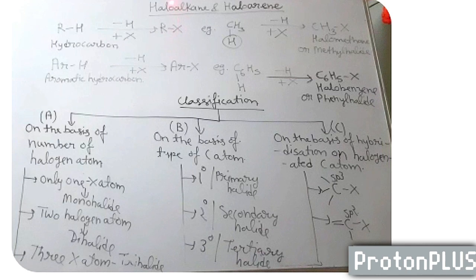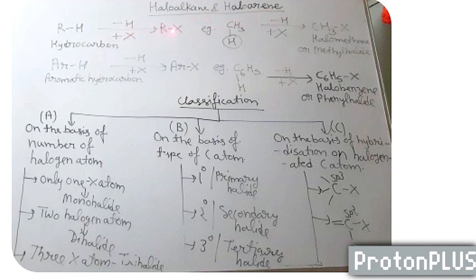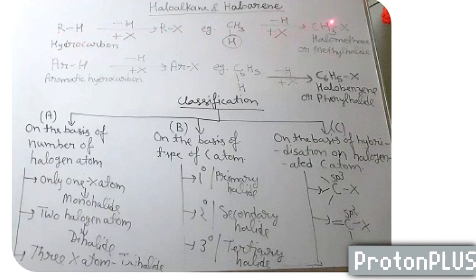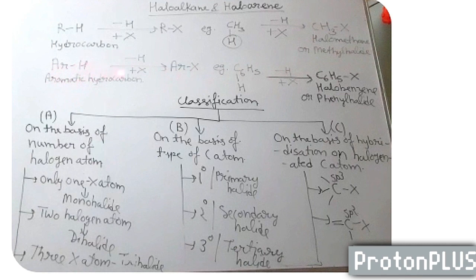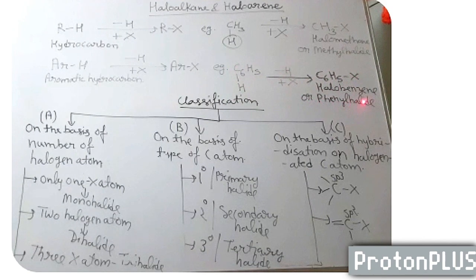Hello children, today we will start haloalkanes and haloarenes. Haloalkanes and haloarenes are compounds in which hydrogen is substituted by a halogen atom. For example, if your hydrocarbon is methane CH4, and this hydrogen is substituted by a halogen atom, it results in halomethane or methyl halide. Similarly, if we take aromatic hydrocarbon like C6H6, that is benzene, and this hydrogen is substituted by a halogen atom, it results in halobenzene or phenyl halide.